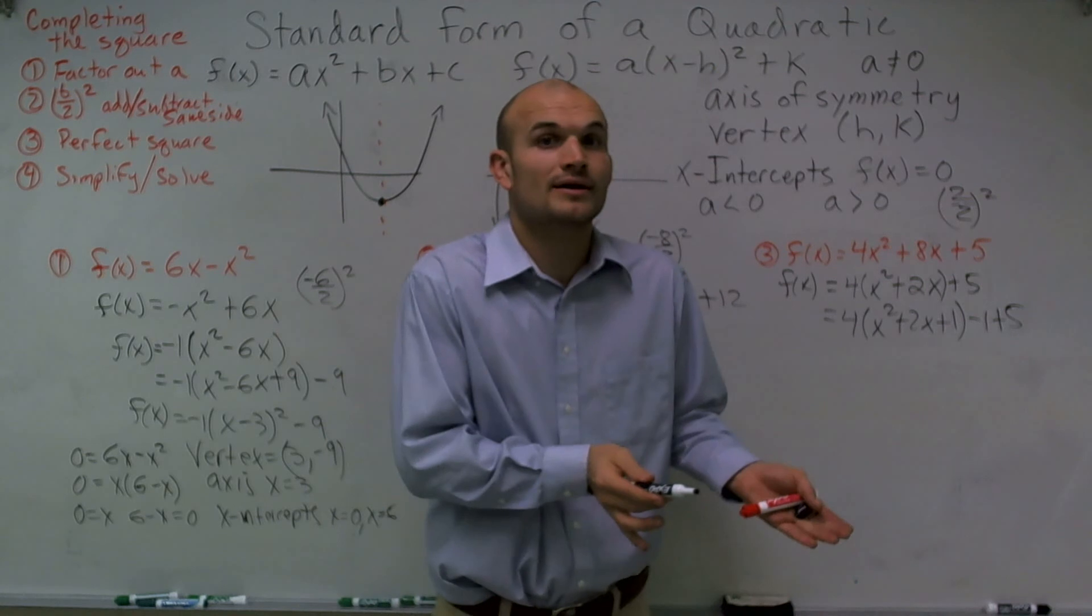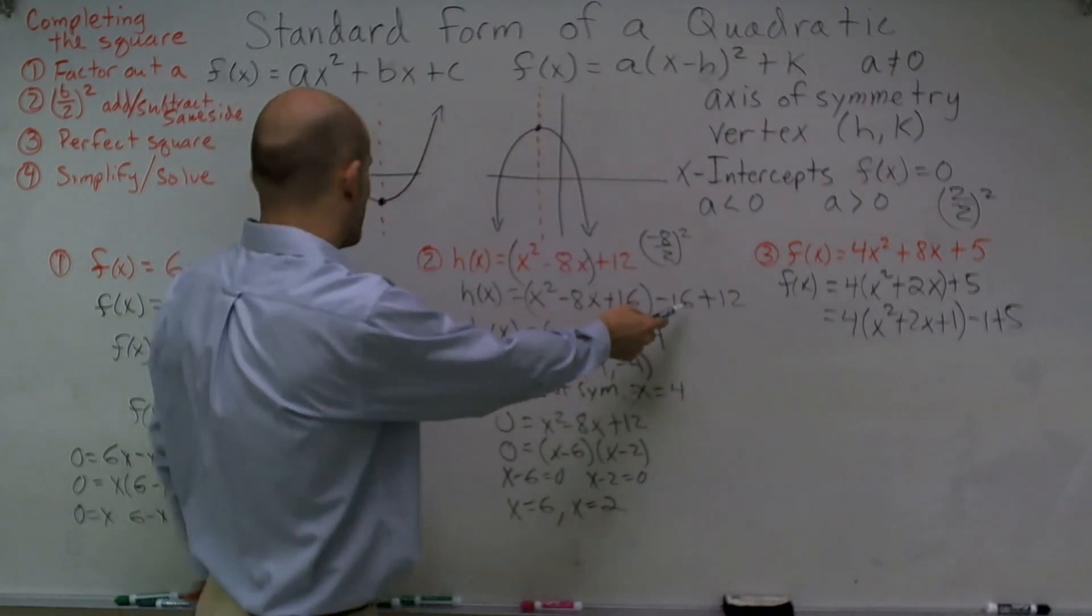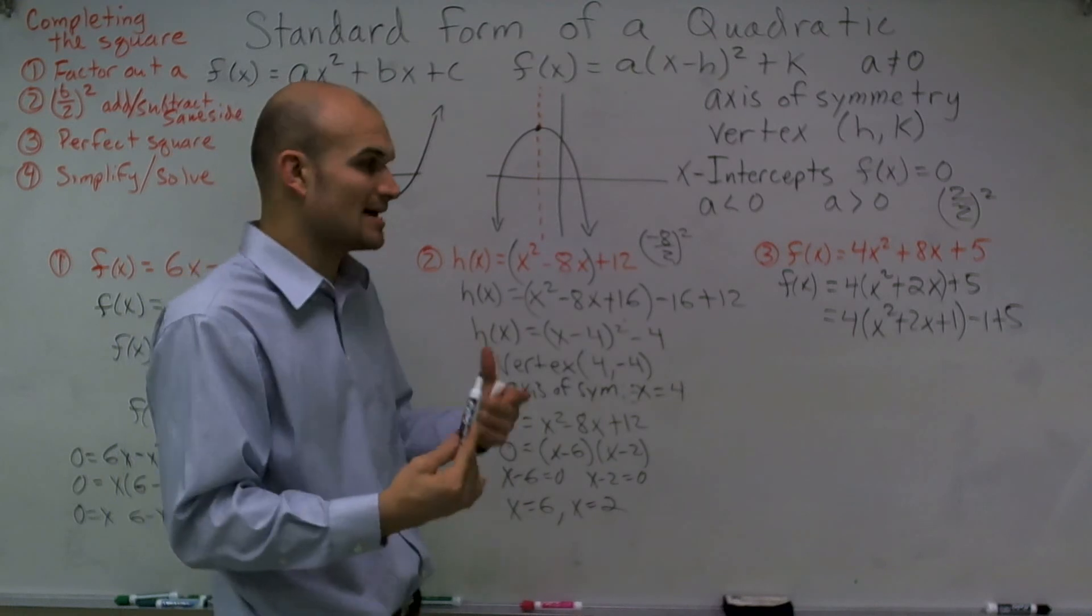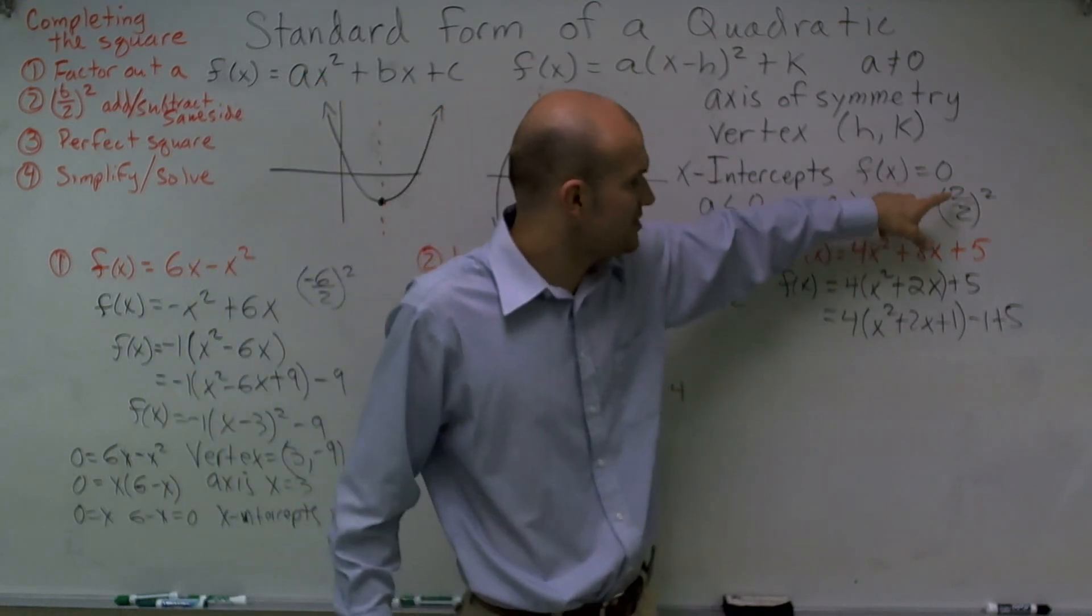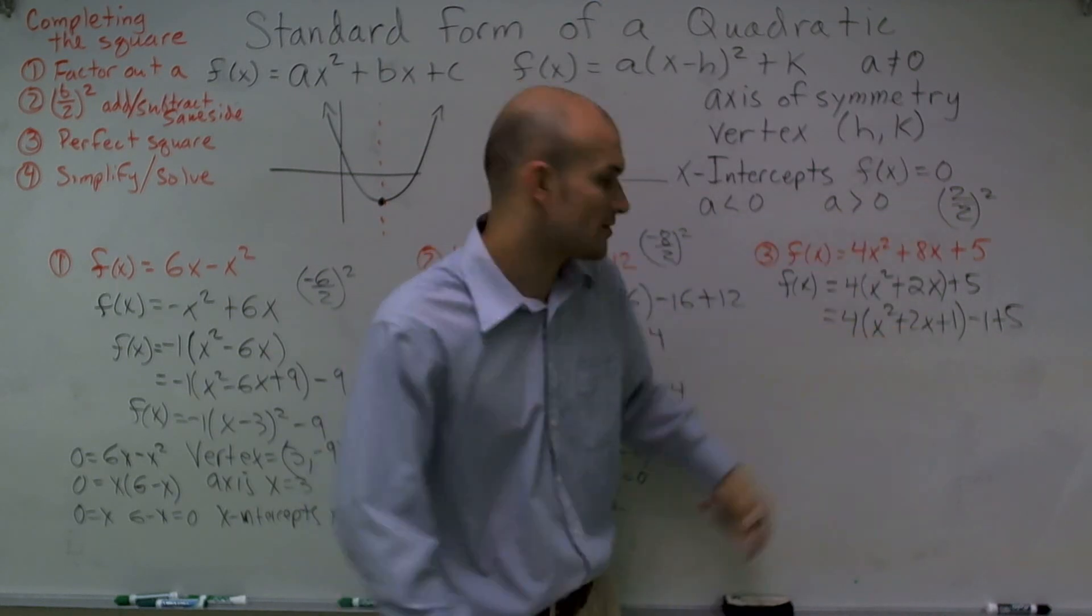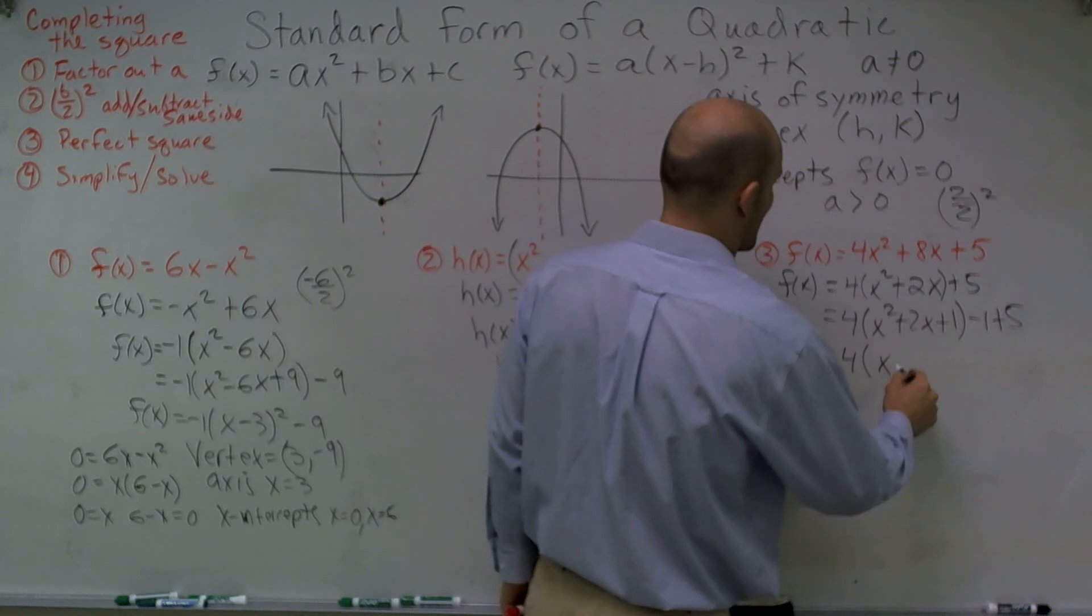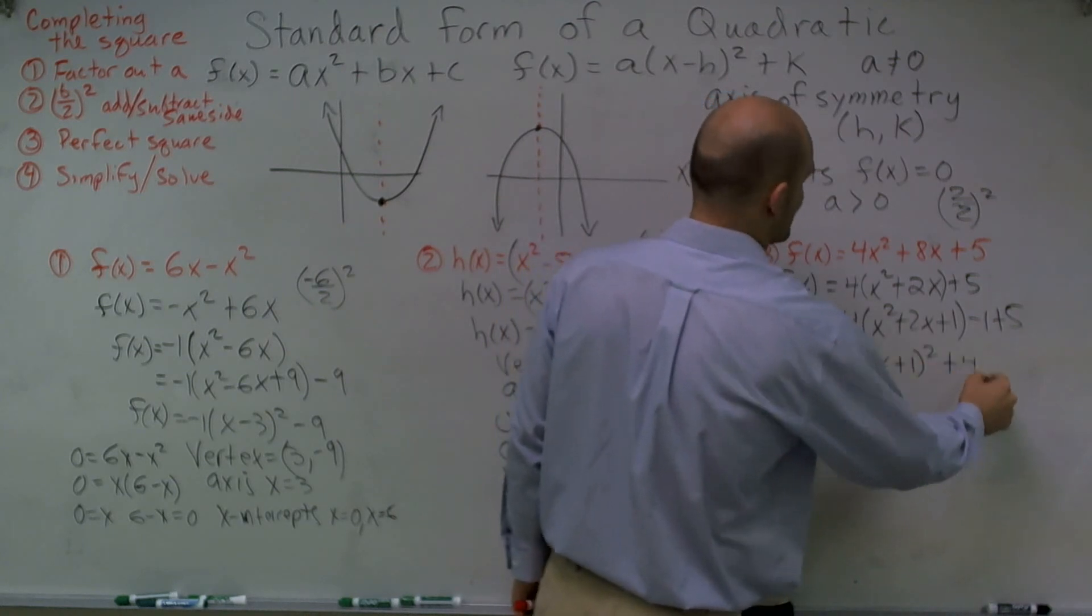So therefore, I'm left with 4 times x² + 2x + 1 - 1 + 5. Make sure if we're going to add 1, we've got to subtract 1. It's a very common process with completing the square. Now, remember that 2 divided by 2 was positive 1. Well, when I write this as a perfect square, I get 4(x + 1)² + 4.